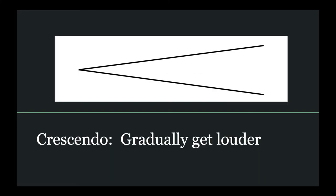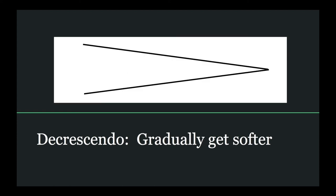This symbol is a crescendo. It means to gradually get louder. It is important to note that gradually means over time. Sometimes in your music you won't see this symbol, but you will see the abbreviation CRESC, or cresc. These mean the same thing. Just as we can get louder over time, we can also get softer. This is a decrescendo, which means to gradually get softer.